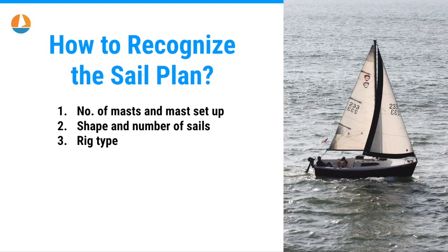So how do you actually recognize the sail plan being used? Well, there are three steps. Step one: check the number of masts and the way they are set up. This one has one mast, and that immediately limits the boat types to the cat, the sloop, and the cutter — only three choices. Then we look at the shape and number of sails. This one has two sails, so immediately I know it's a sloop. Then I look at the shape of the mainsail, which is triangular, so it's a Bermuda sloop. I've pinpointed the boat type. The shape of the sail is the rig type — the way the sail is attached to the mast.